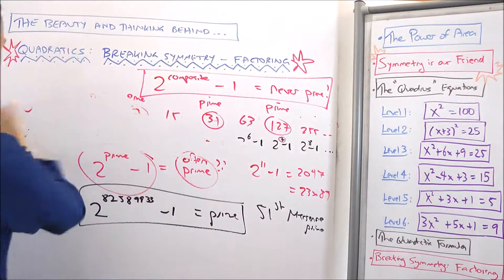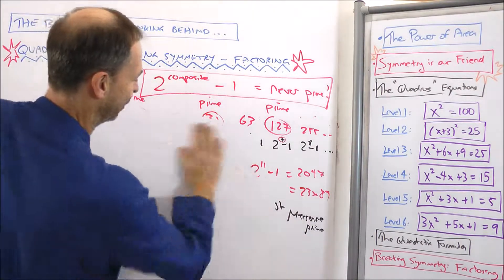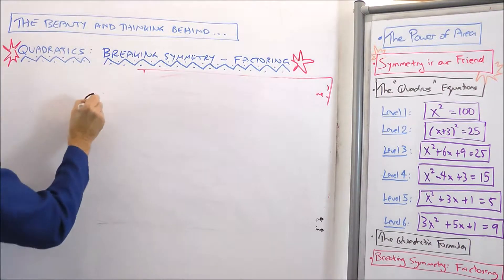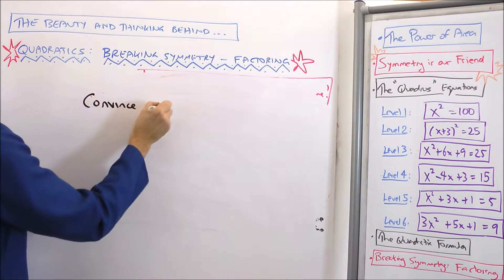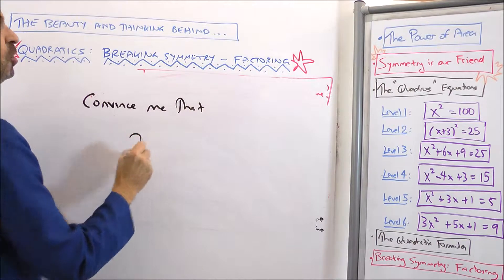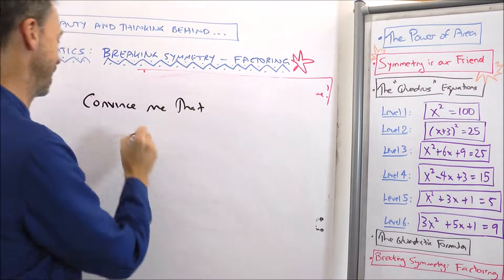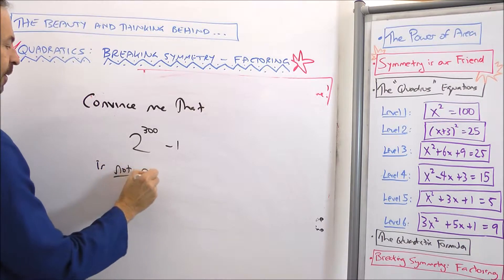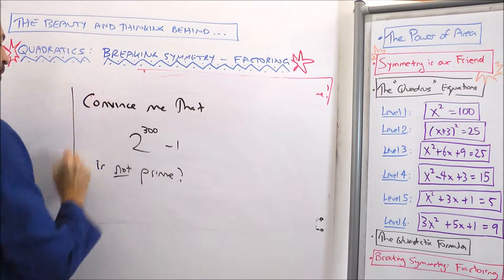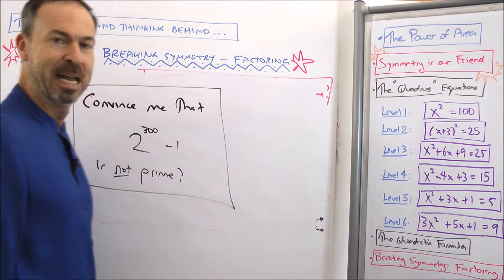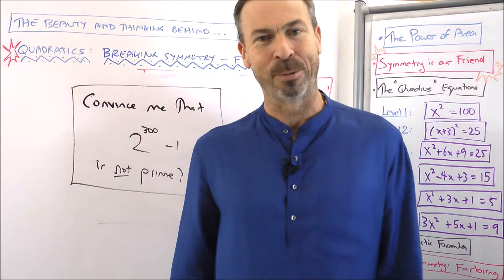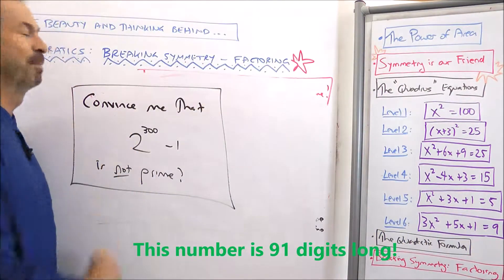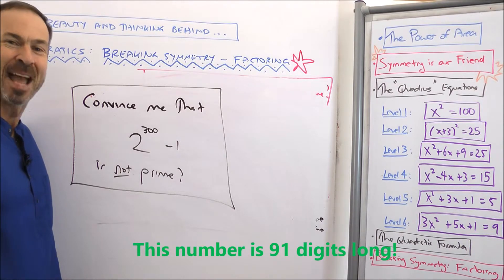So here's my question for you, which is related to the work we're going to be doing today. Let's do a specific example: convince me that 2 to the 300 — that's a composite number — 300 minus 1 is not prime. I believe that's a very big number; your calculator probably couldn't handle it, probably couldn't show you all the digits. Nonetheless, convince me this is not prime. That's today's puzzle.